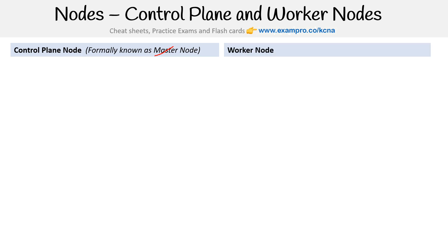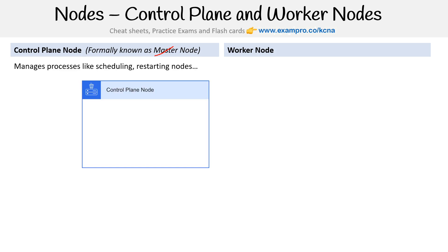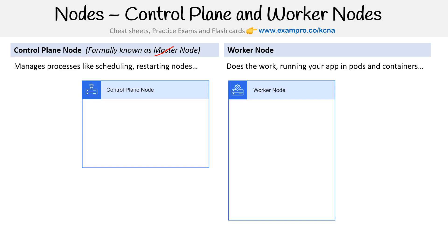The control plane node manages processes like scheduling and restarting nodes. The worker node does the work, as the name implies — it runs your apps, your jobs, and it's running pods and containers. Both run pods and containers, but when we think of pods and containers, we're thinking more of the worker nodes, because the control plane components, even though they are pods, we think of them as distinct components. Let's take a look at the components involved here.